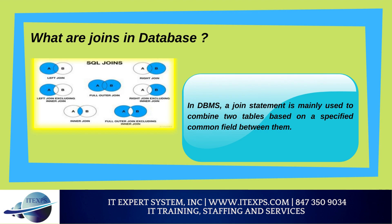Outer join is a join that returns the records in both tables whether or not there are matching records. The outer join can be further divided into three types. Left outer join returns all the values of the left table and the matching values of the right table. If there is no matching result in the right table, it will return null values in that field.